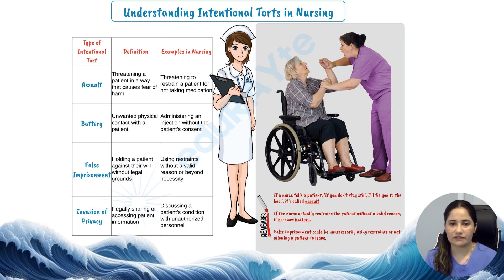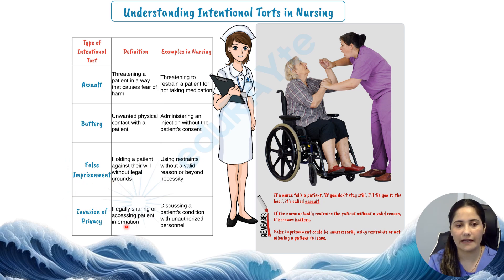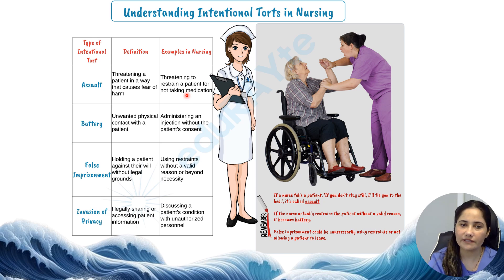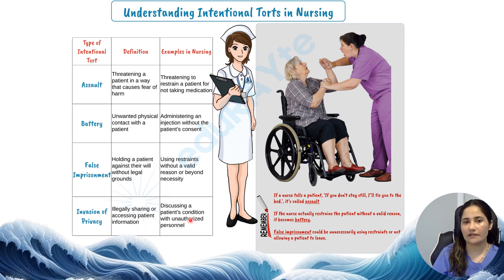There are several types of intentional torts in nursing: assault, battery, false imprisonment, and invasion of privacy. Let's go through some real-life scenarios. Imagine a nurse tells a patient, 'If you don't stay still, I'll tie you to the bed' — this is assault as it instills fear. If the nurse actually restrains the patient without a valid reason, it becomes battery. False imprisonment could be unnecessarily using restraints or not allowing a patient to leave. If a nurse shares a patient's health details with someone not involved in their care, it's an invasion of privacy.